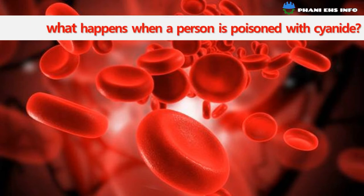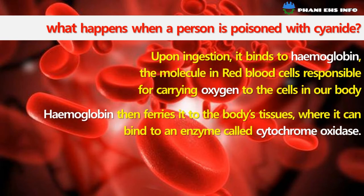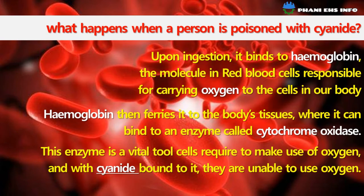What happens when a person is poisoned with cyanide? Upon ingestion, cyanide binds to hemoglobin — the molecule in red blood cells responsible for carrying oxygen to the cells in our body. Hemoglobin then ferries it into body tissues where it binds to an enzyme called cytochrome oxidase. This enzyme is vital to cells required to make use of oxygen, and with cyanide bound to it, they are unable to use oxygen.